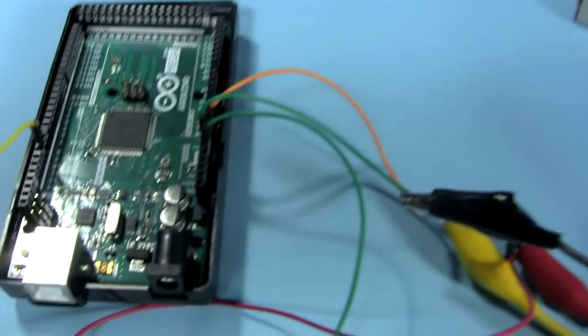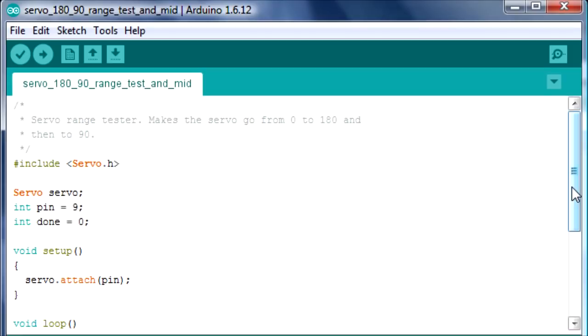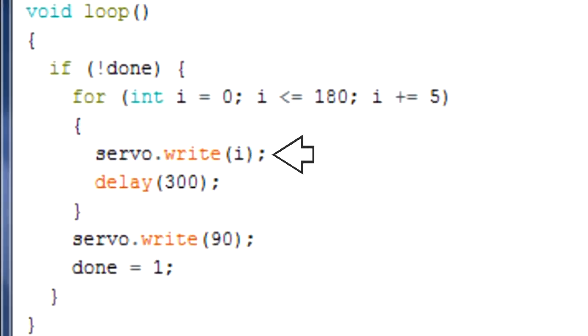I'm using an Arduino Mega for the brains. Here's a diagram of how it's all connected up. Here's the code I'll run. It makes the horn rotate from 0 to 180 degrees in steps, and then goes to the center position at 90.